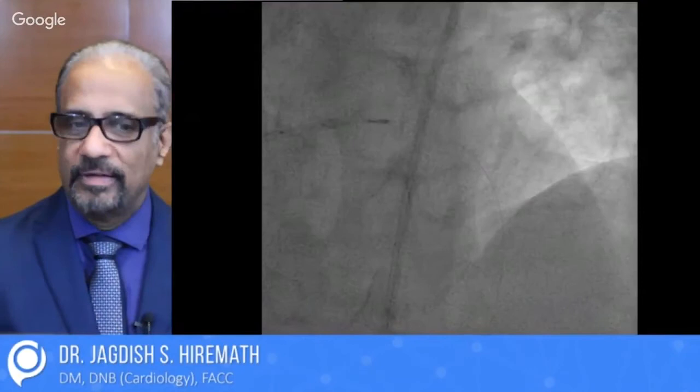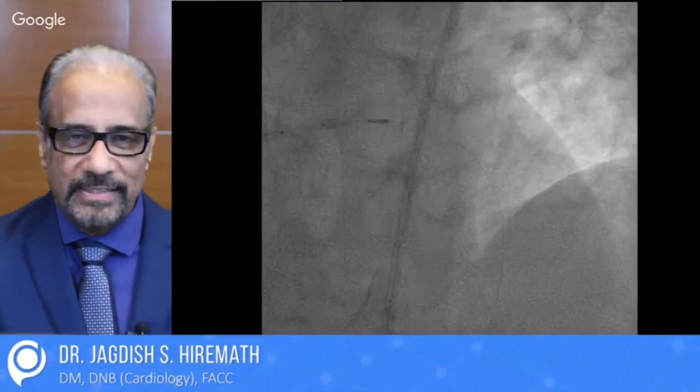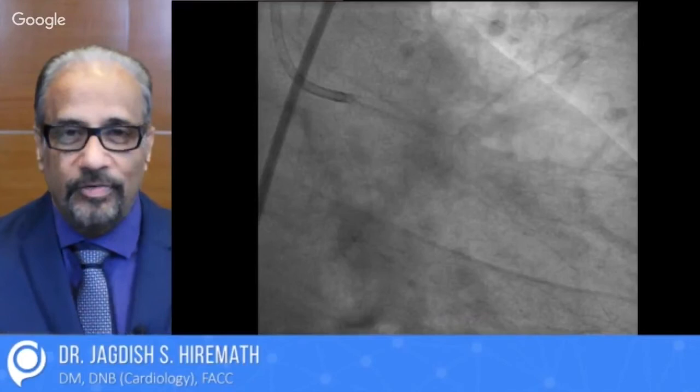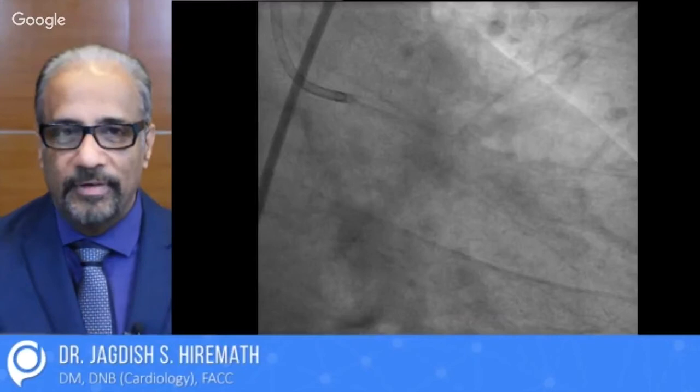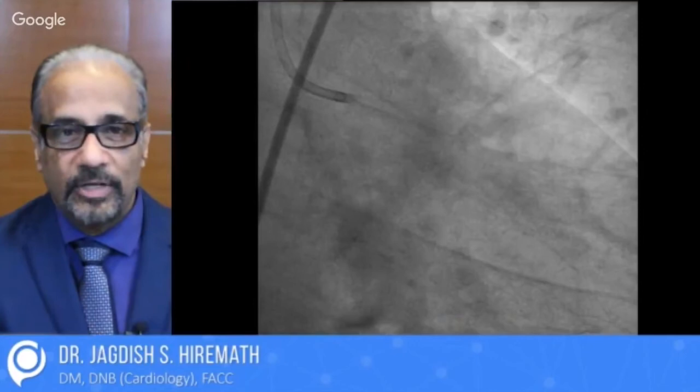When you have problems related to left main, we use a device called IVUS — the intravascular ultrasound — which actually looks inside the artery like a sonography. You can characterize a lesion: where it is calcific, where it is thrombotic, where it is ulcerated. Based on that, you can choose the modality of treatment. And after stenting, if you do the IVUS, it tells us that the stent is well apposed — good apposition of a stent to the vessel wall is a hallmark of success of angioplasty.